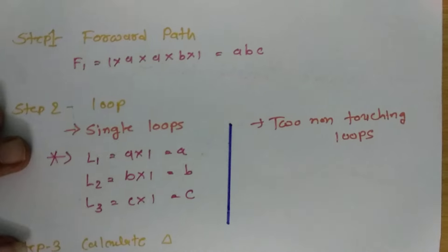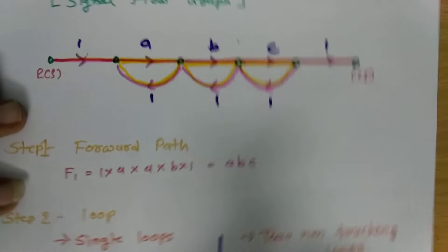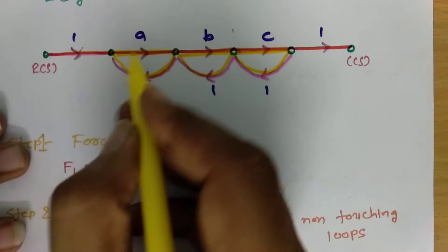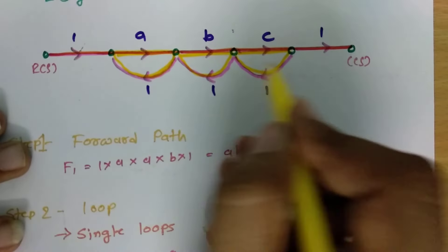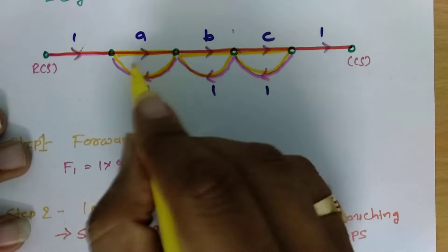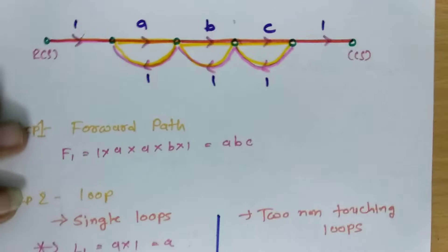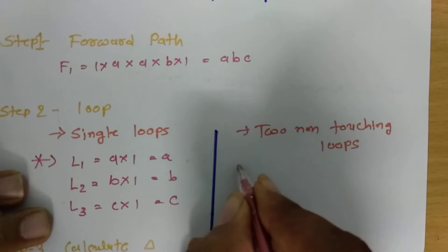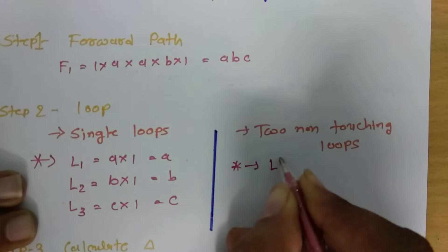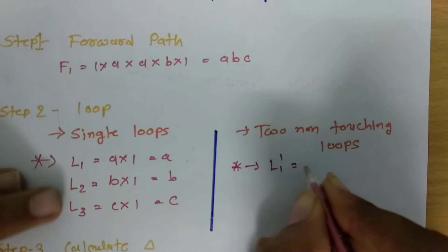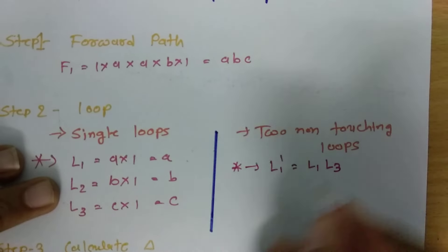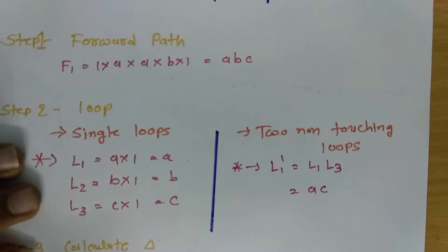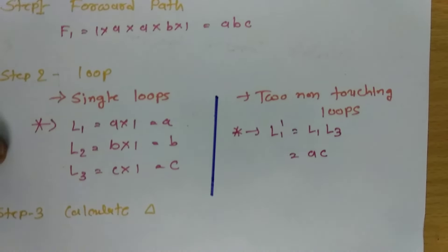For two non-touching loops, looking at the diagram, we can see that loop L1 and loop L3 are not touching each other — only these two loops are non-touching. We give this the notation L1', which equals L1 × L3 = A × C.